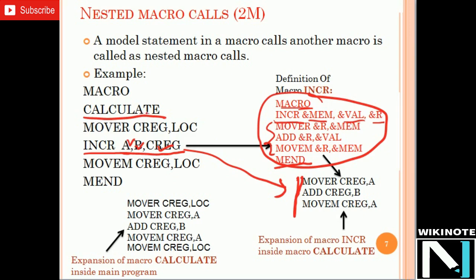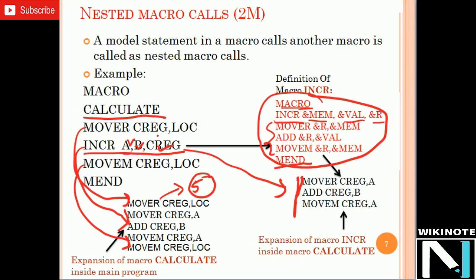Now we will see the expansion of macro CALCULATE. The CALCULATE macro contains its first instruction. For INCR, we generate three instructions. So a total of five instructions are generated to replace the body of the CALCULATE macro call. In this way, when one macro calls another macro, it is termed as nesting of macros. This is the answer to that question.